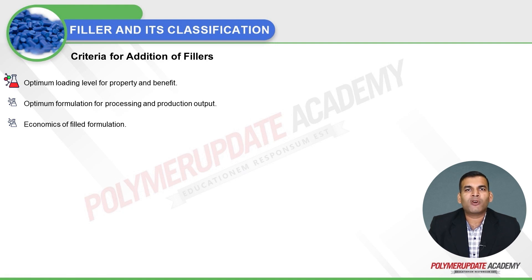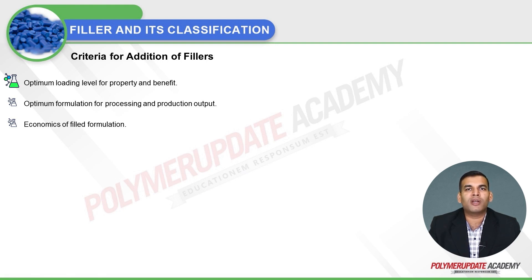Looking at the criteria for addition of fillers, the optimum loading level for both property and benefit is the key target. For example, if the required tensile strength is 35 MPa starting from a base of 25 MPa, product development may achieve that target at around 25% filler addition. Both property improvement and cost benefit must be evaluated together.